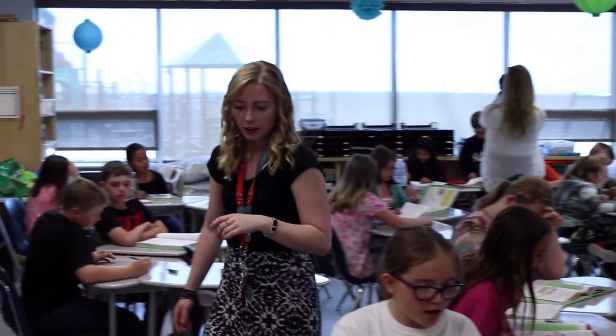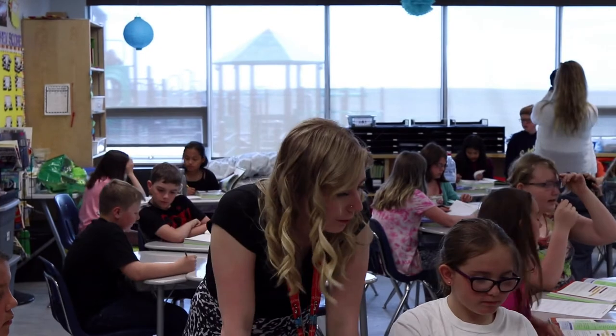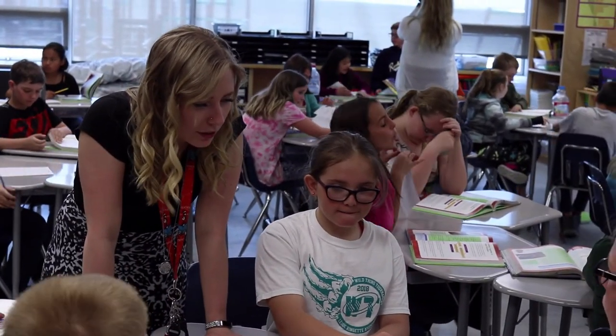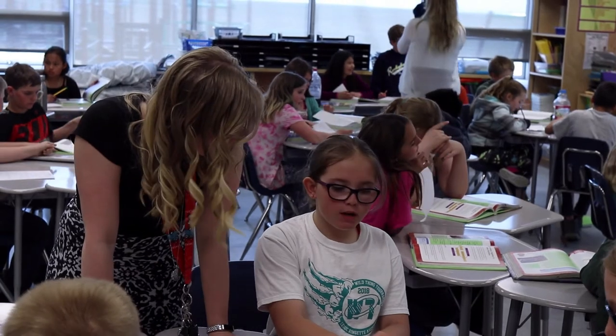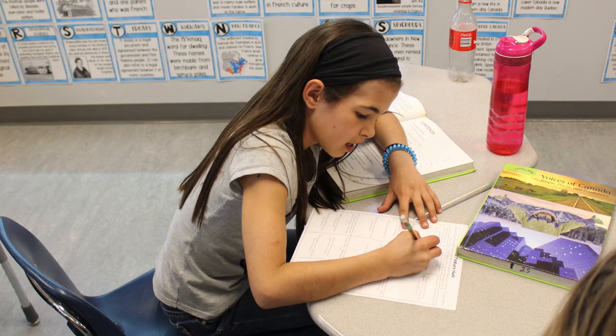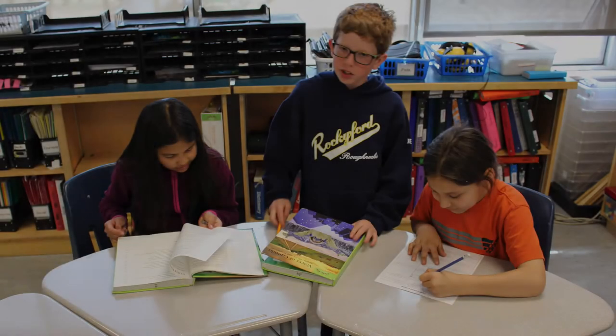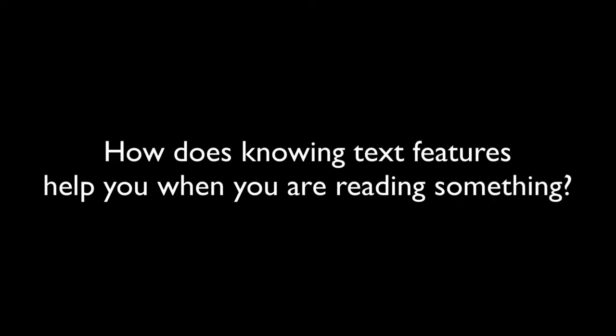While the students work collaboratively through the text feature hunt, Alex circulates around the room assessing the students' ability to find and record examples of text features. She is checking to see if students are finding examples and wondering why the authors have included the text features they have. Alex finds the whole group and smaller breakout groups effective. One student notes: the heading breaks the full paragraph down into just a small thing — it tells you what it's about.